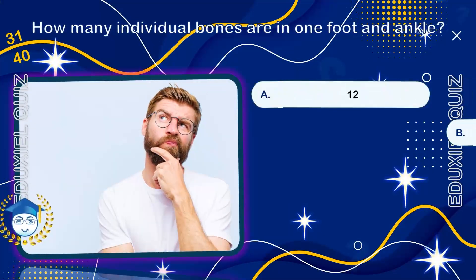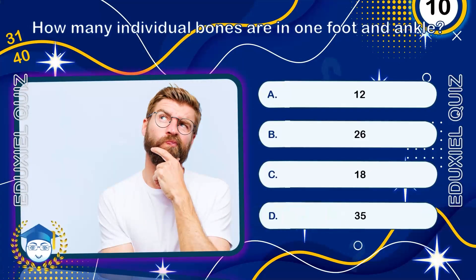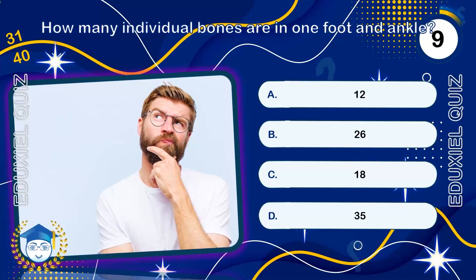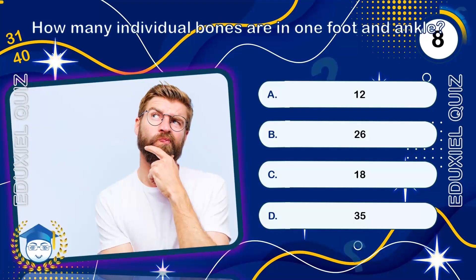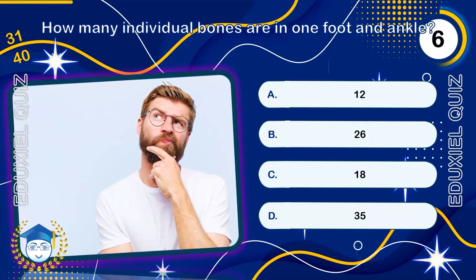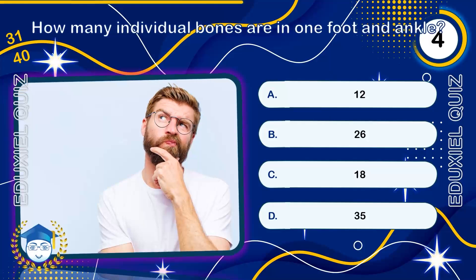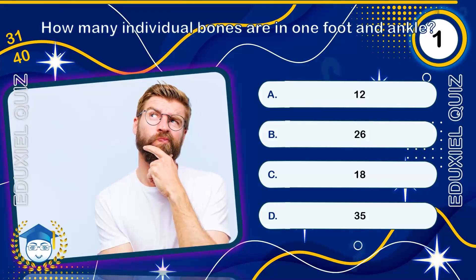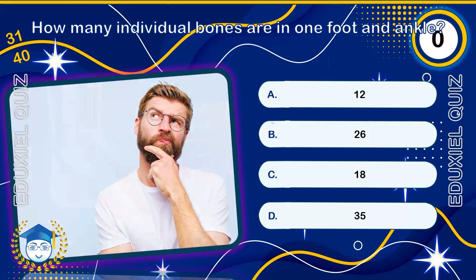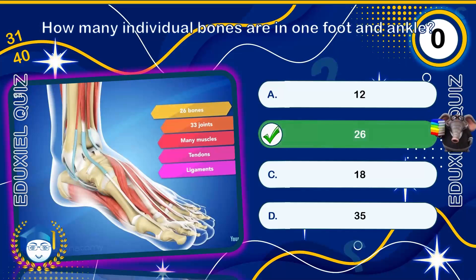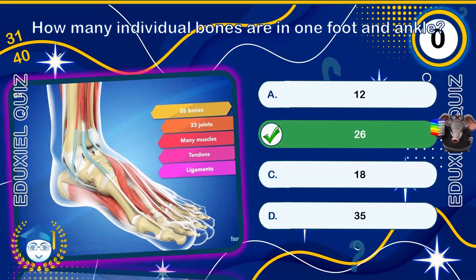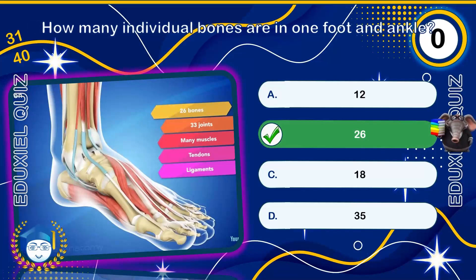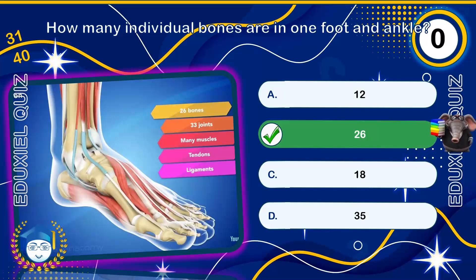How many individual bones are in one foot and ankle? 26. The 26 bones in each foot, combined with the 26 in the other, mean the feet contain nearly a quarter of all the bones in the human body.